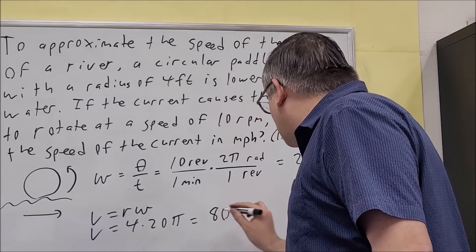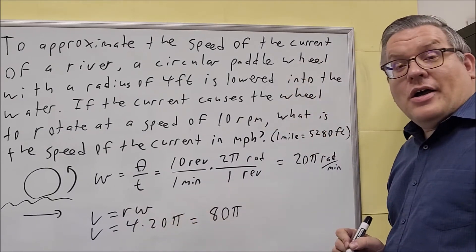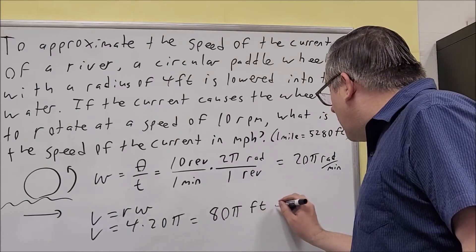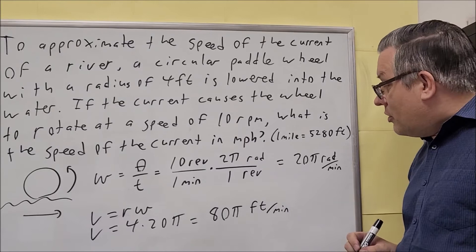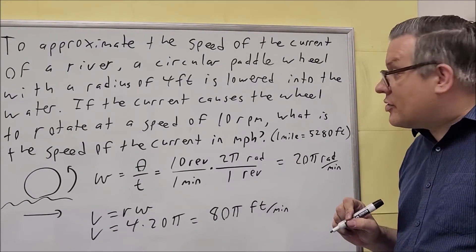Now the units on that, the radians are pretty much a dimensionless unit. We have feet that are here from the radius right there. So the units on this are going to be 80π feet per minute. So that is the linear speed however it's not how they want us to write our answer.